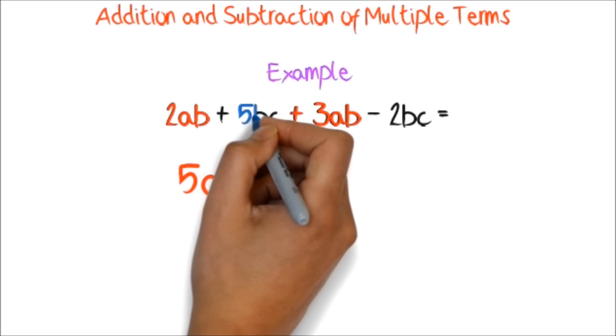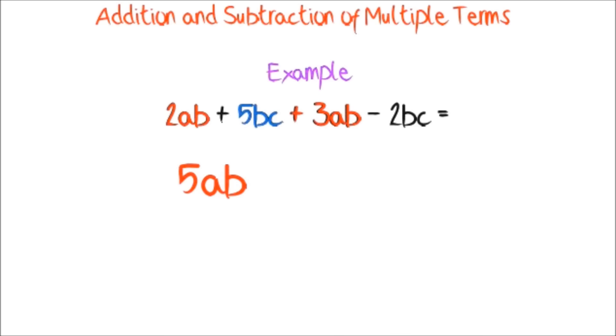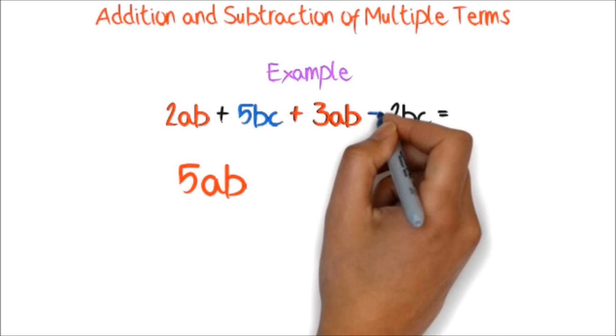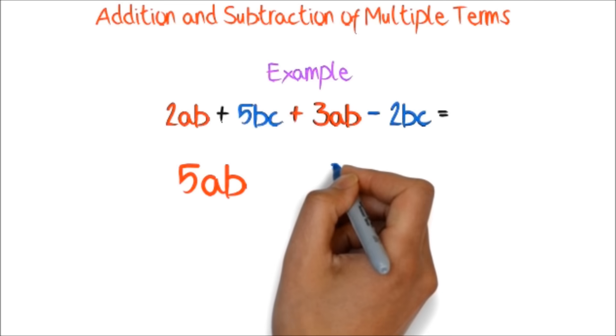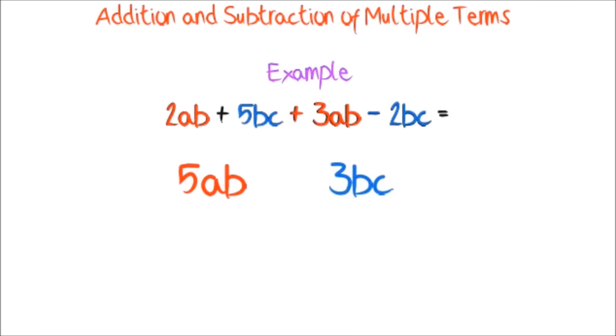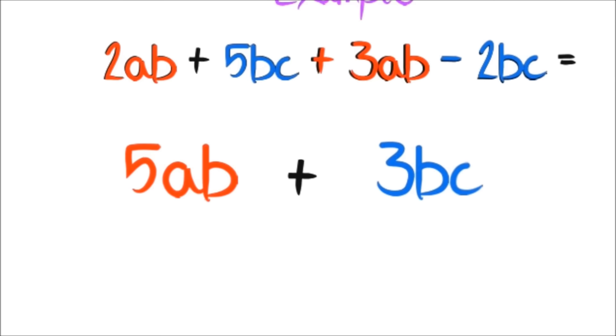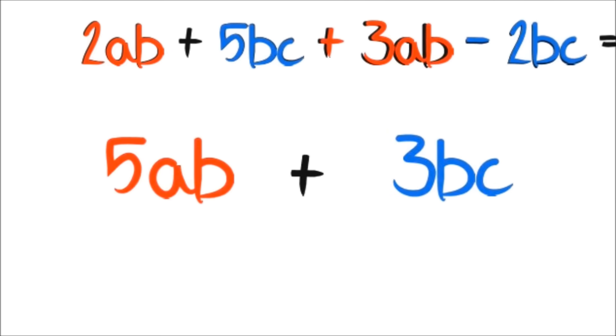Next, we pick the 5bc. We look for another term with bc. Here, we have negative 2bc. We work on 5bc minus 2bc to get 3bc. We cannot add 5ab and 3bc, since they have different letters after them. So, that is our final answer.